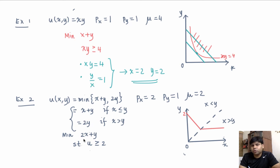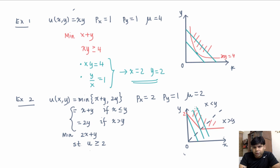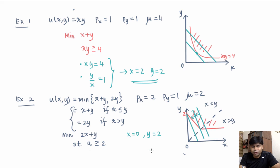We want to minimize 2x plus y subject to the constraint that the point is picked from this region. We draw iso-expenditure curves, which have slope 2. As we move down in this direction we are reducing our expenditure, and clearly the optimal point is where expenditure is minimized. The Hicksian demand for this problem is x equals 0 and y equals 2.